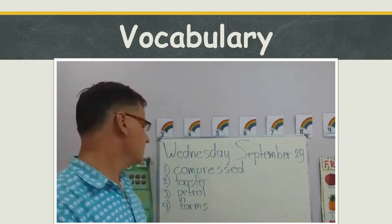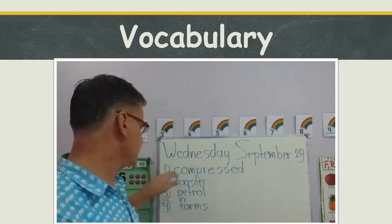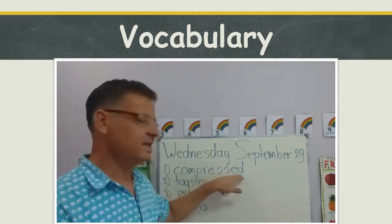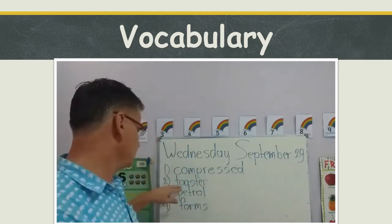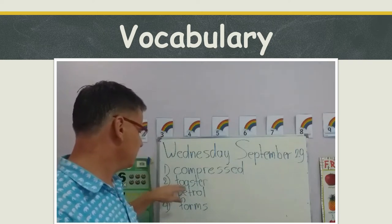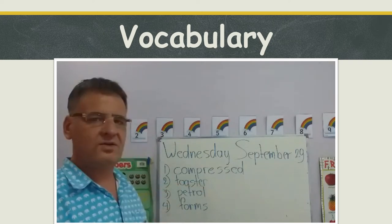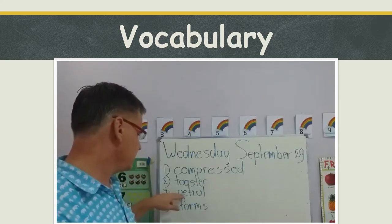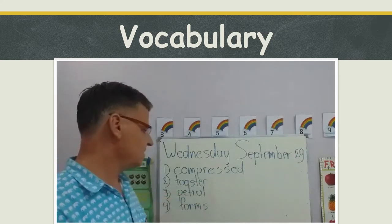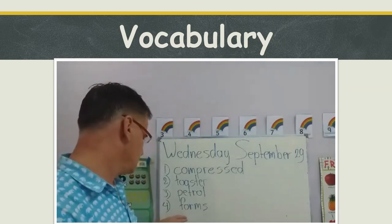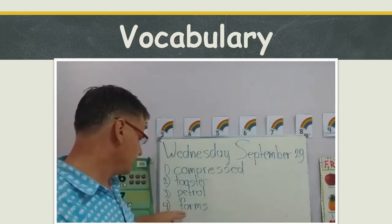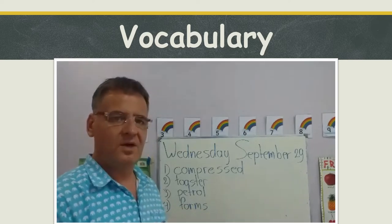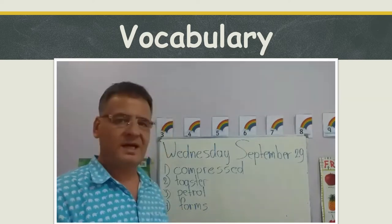One more time: number one — compressed; number two — toaster; number three — petrol; number four — forms. Now let's have a look at our lesson for today.